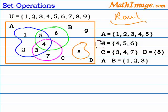And the set B has elements 4, 5, and 6. Also, the set C has elements 3, 4, and 7.